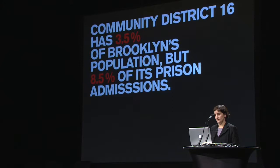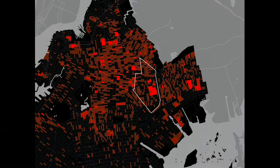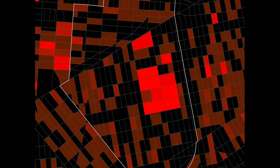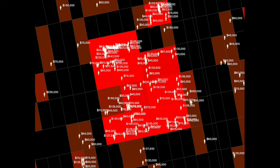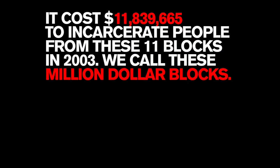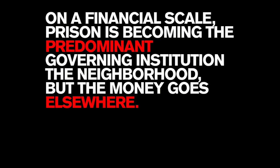Community District 16 has 3.5% of Brooklyn's population, but 8.5% of its prison admissions. When you zoom in, these are the people, and this is how much it costs to incarcerate each one of them — these are their buildings. In those 11 blocks, it cost $11 million to incarcerate people from these 11 blocks in 2003. We've given this the name million dollar blocks.